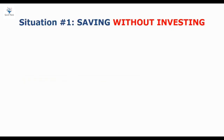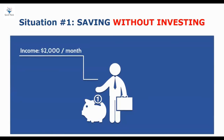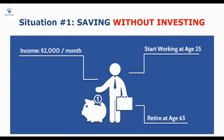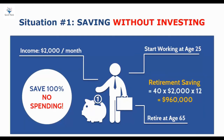First of all, I want to talk about saving and investing. There are a number of financial mistakes that people make in their lives, and one of the most serious is that they don't understand saving and investing. Saving won't make you richer — investing will. For example, you're making $2,000 a month. You start working at age 25 and decide to retire at age 65, so your working period is about 40 years. Assume you can save 100% of your income. With the average income of $2,000 a month, if you keep working hard for 40 years and save all your money, you'll be able to make a maximum of $960,000 — you would almost be a millionaire.